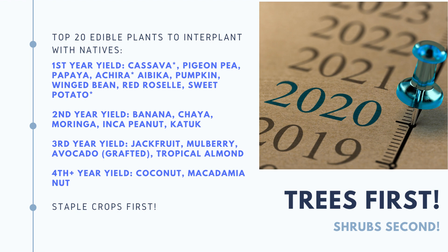Going into the second year, I can start to add banana, chaya, moringa, inca peanut, katuk, star fruit, jackfruit, mulberry, avocado, tropical almond, coconut, and macadamia. By planting these staple crops first in guilds around your natives, you're not going to have to fertilize, use pesticides, or use any herbicides that are known carcinogens. And that's an hour presentation in five minutes.